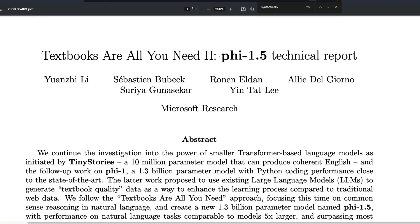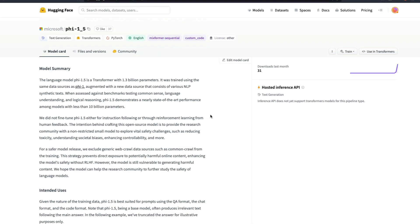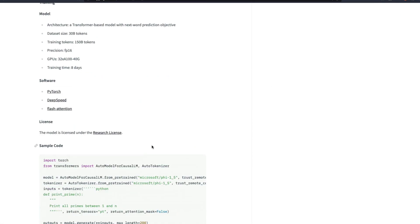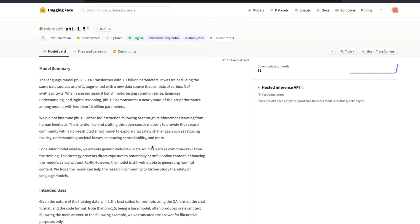Textbooks are all you need, part two. It's a new paper from Microsoft that describes the model Phi 1.5, which is also something that they have open source. The model weights are available on hugging face model hub for you to use it. This model is not fine tuned. This model is not RLHF. It comes up with the research license that you can directly go ahead and use it for research purposes.